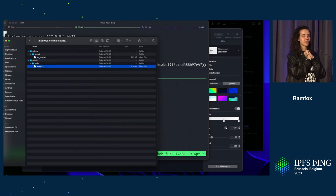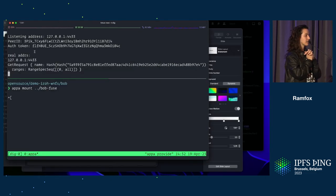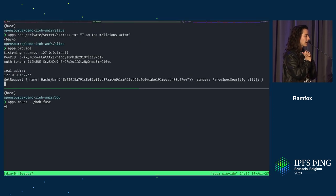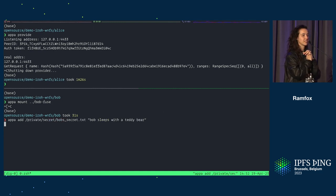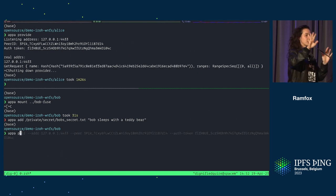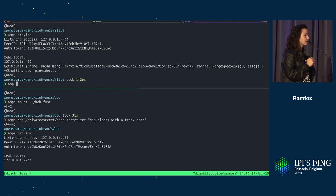So now Bob has his own secret that he wants to share. And let's see if he can get that back to Alice. Bob's secret's a little less dramatic. He just likes to sleep with a teddy bear. But he trusts Alice with this information. So he's now going to provide. And Alice is now going to poll.